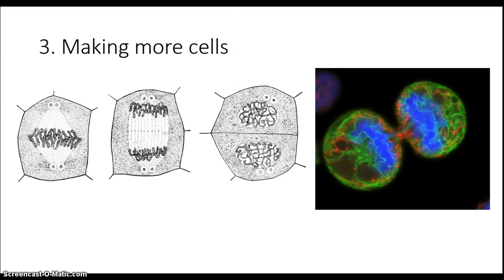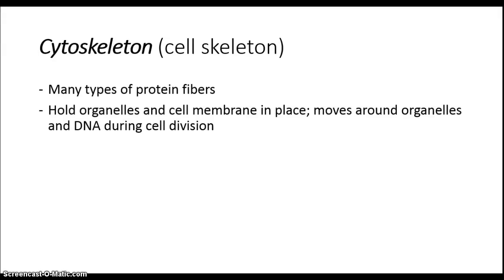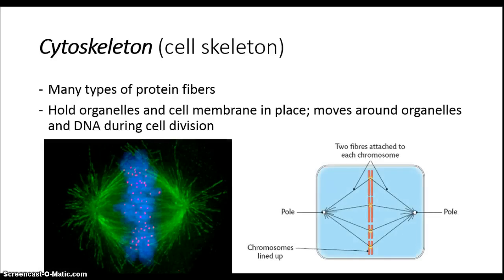We can see through fluorescence microscopy the division of the DNA, shown here in blue, by various components of the cytoskeleton. The cytoskeleton, or cell skeleton, is a series of fibers that crisscross the cell that hold organelles in place, as well as move them around during cell division, so that each daughter cell gets an equal component of organelles and DNA.